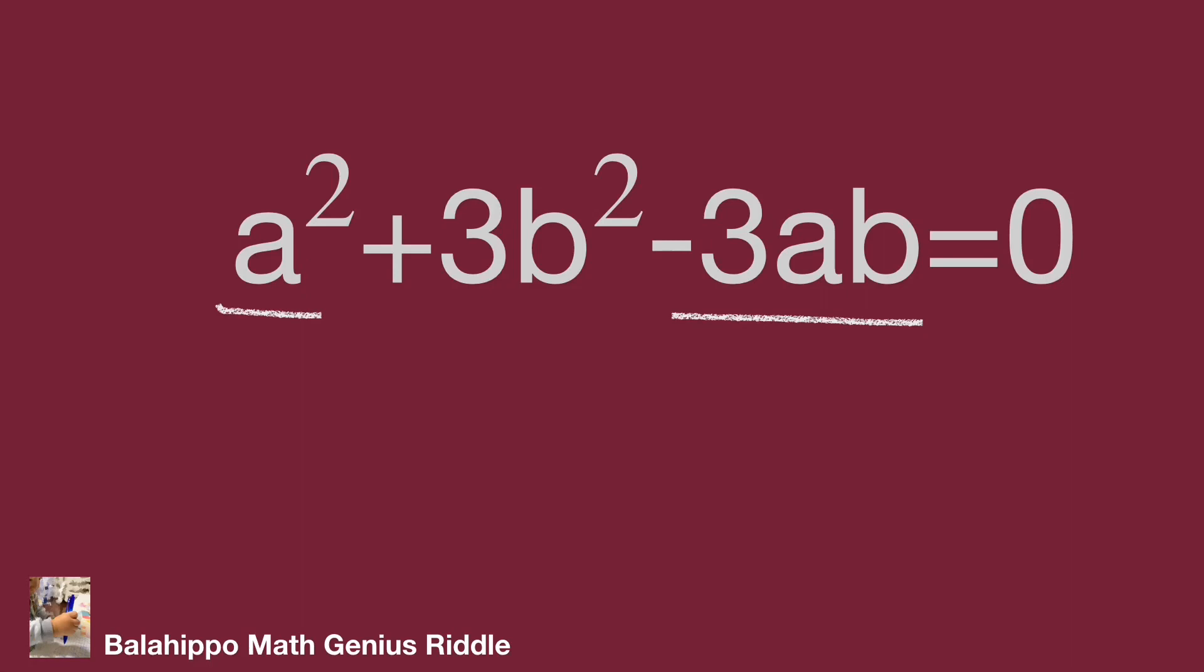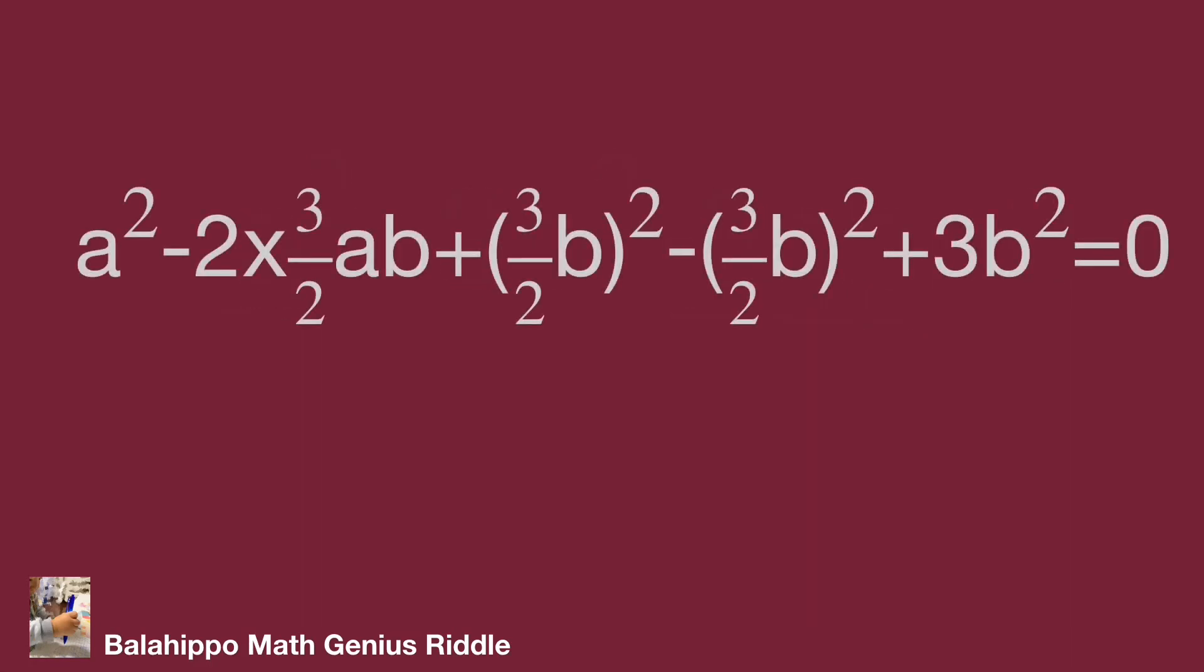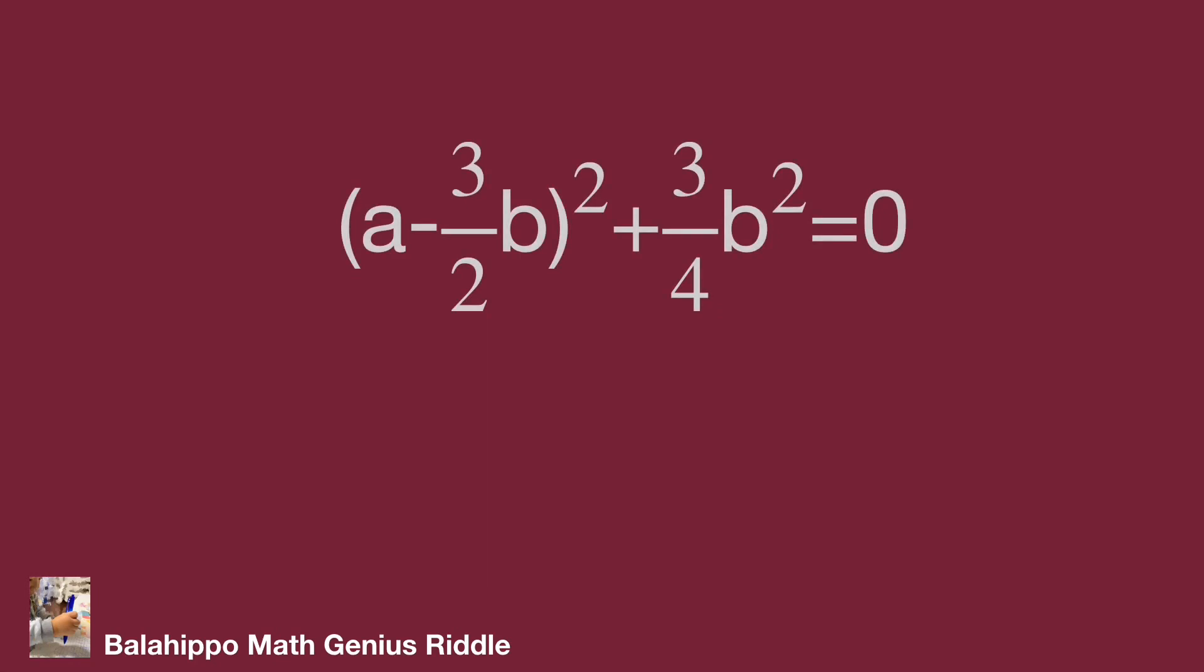Therefore, distribute the item as a² - 2 times (3/2)ab + (3/2b)². They will become a perfect square. Then minus (3/2b)² + 3b² = 0. Generate the square and simplify the equation as (a - 3/2b)² + 3/4b² = 0.